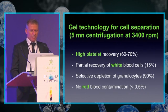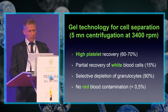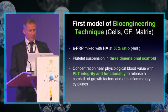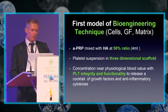This achieves a high blood recovery rate of 60–70%, partial recovery of white blood cells at 15%, selective depletion of granulocytes at 90%, and no red blood contamination at 0.5%. Cellular Matrice is the first model of bioengineering technique where PRP meets HA at a 50% ratio, with platelets suspended in a three-dimensional scaffold. Concentration is near physiological blood values, with platelet integrity and functionality to release a cocktail of growth factors and anti-inflammatory cytokines.